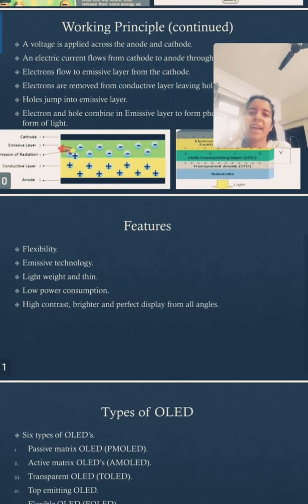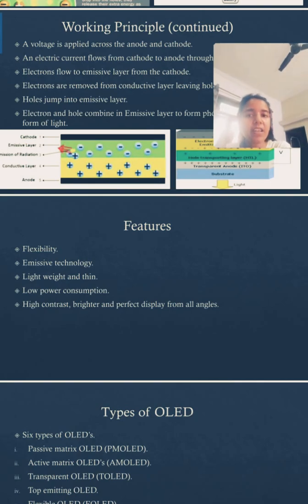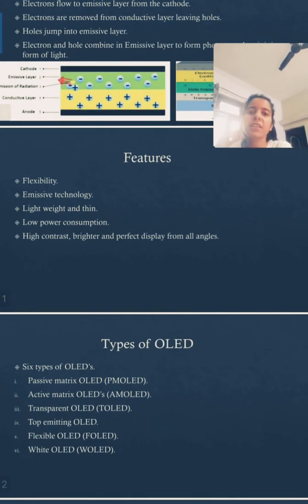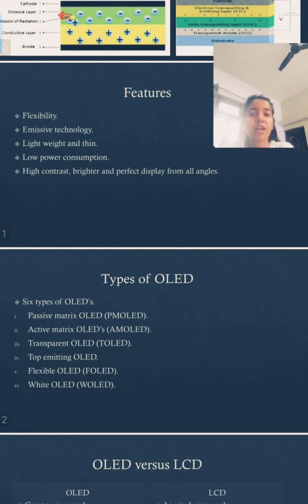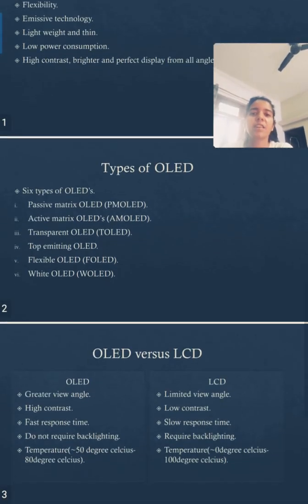The features of OLEDs include: flexibility, emissive technology, light weight, thin profile, low power consumption, high contrast, greater brightness, fast response, and wide viewing angles. There are six types of OLEDs: Passive Matrix OLEDs, Active Matrix OLEDs, Transparent OLEDs, Top Emitting OLEDs, Flexible OLEDs, and White OLEDs.